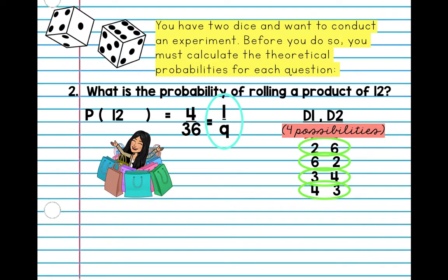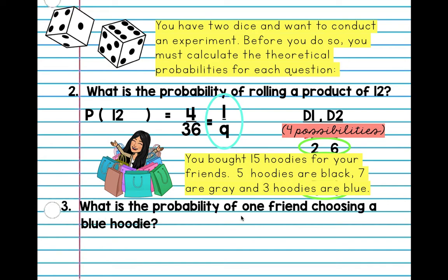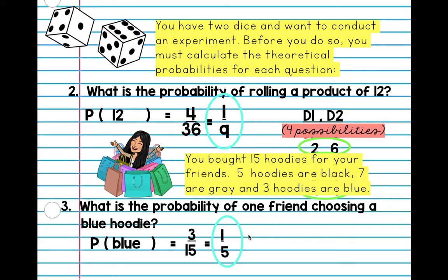Let's do one last one. This is a different scenario. You bought 15 hoodies for your friends. Five hoodies are black, seven are gray, and three are blue. The question is, what is the probability of one friend choosing a blue hoodie? So let's look at our event. We're looking for a blue hoodie. We know that there are three hoodies. So three over 15. Let's reduce our fraction. It equals one fifth. And that's all. So again, review the video from before just to find out the percent and fraction. The percent, you just divide one by five. And then for decimal, once you find your fraction, you can find your decimal.